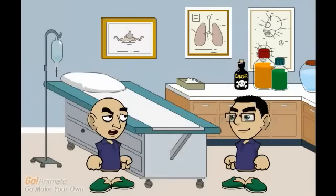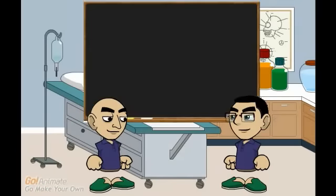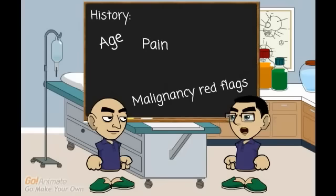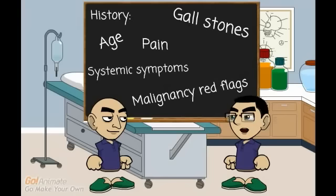But how do you assess a patient with obstructive jaundice? You need to take a full history including age, also if there's any pain and its characteristics, malignancy red flags, systemic symptoms, gallstones, and previous biliary surgeries.